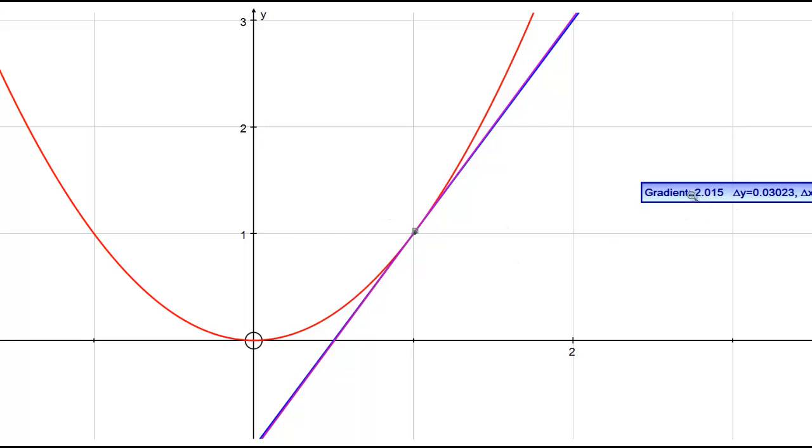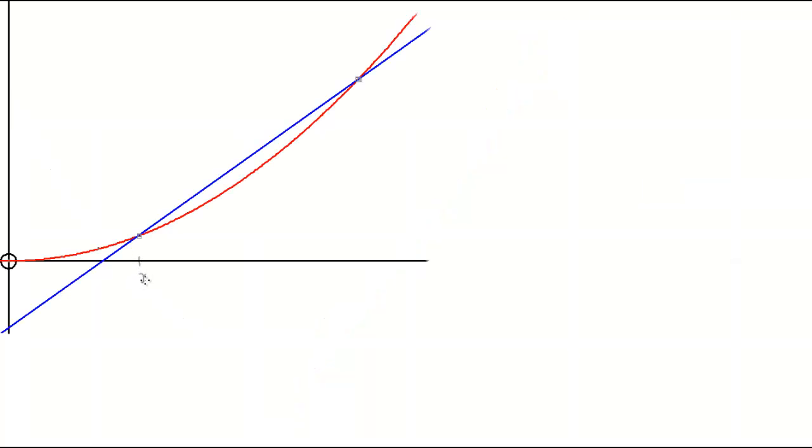And the closer we move that point to 1, the closer that gradient will get to 2. So let's see if we can come up with an argument in general.